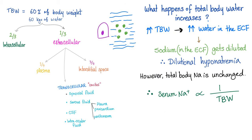Total body water is 60% of your body weight — two-thirds inside the cell, one-third outside. The extracellular fluid can be in the plasma, the interstitial space (which is the majority of the ECF), or the transcellular fluid — meaning body cavities: synovial fluid, serous membranes (the three Ps: pleura, pericardium, peritoneum), CSF, and intraocular fluid. That's a tiny amount. The majority of the ECF is in the interstitial space.